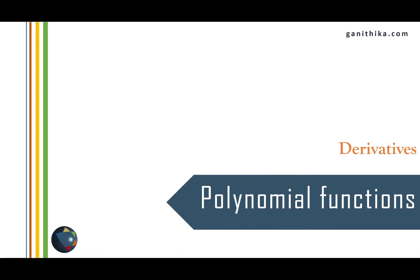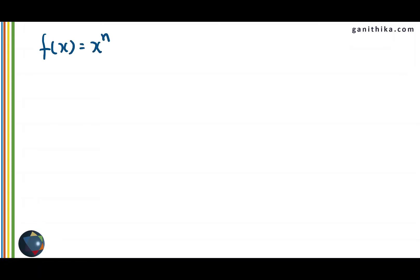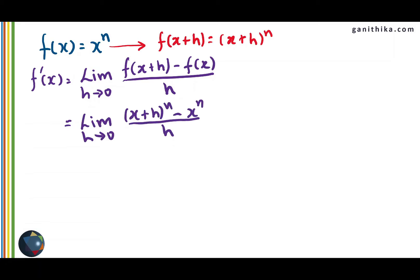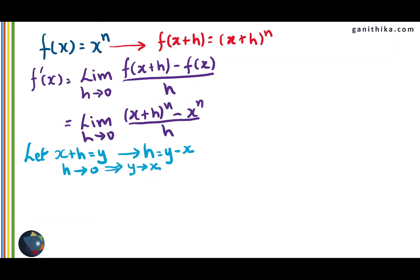Let us use the first principle method to find the derivative of the polynomial function x to the power of n. We need to find f(x+h), which is (x+h)^n. The first principle method states: f dash of x equals limit as h tending to zero of f(x+h) minus f(x) over h. Substituting the values, we let x plus h equal y, therefore h equals y minus x. The denominator becomes y minus x and the numerator becomes y^n minus x^n. As h tends to zero, y tends to x, so the expression becomes the limit as y tending to x of y^n minus x^n over y minus x.